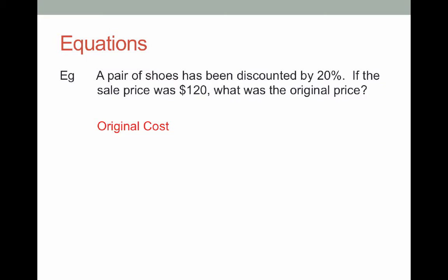So what I'm going to ask you is: what would I do to the original cost to discount it by 20%? Now the original cost is 100% of the amount that we're trying to work out. If I want to discount that by 20%, I actually want to find 80% of the original cost.